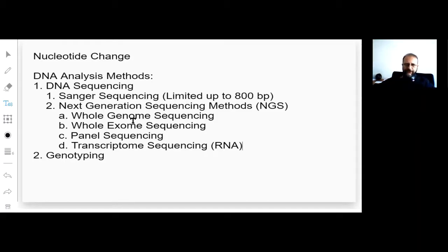So there are two groups of methods for DNA sequencing. The first one is Sanger sequencing, which is the classical method, which is gold standard. But it's limited to 800 base pairs. In one reaction, you cannot read more than 800 base pairs. If you want to read more, you have to do more reactions.